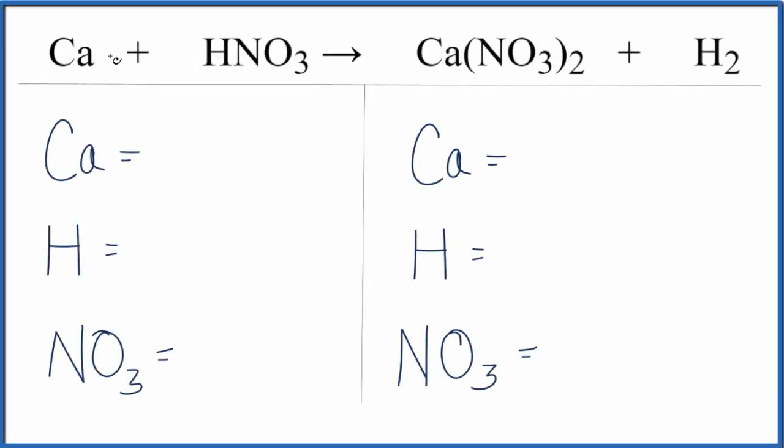In this video, we'll balance the equation Ca plus HNO3 gives us Ca(NO3)2 plus H2.